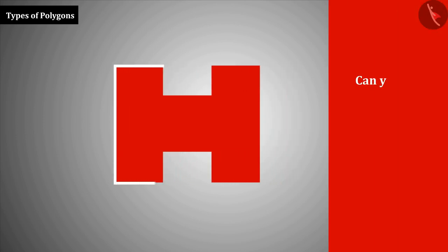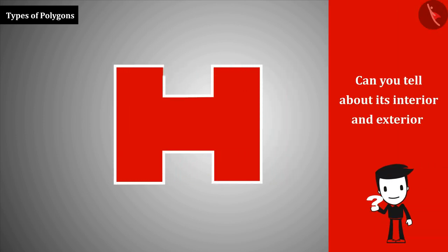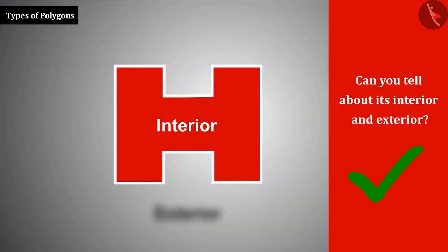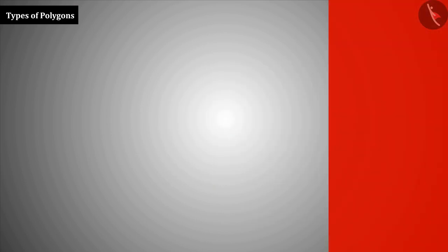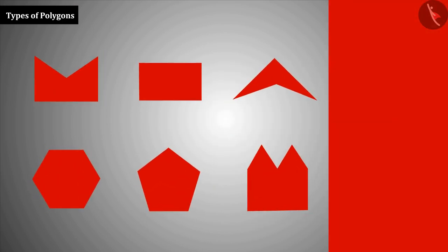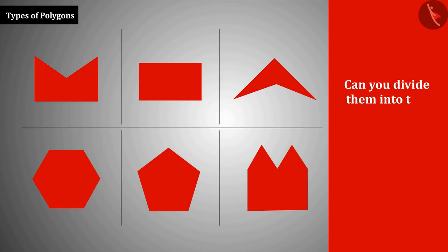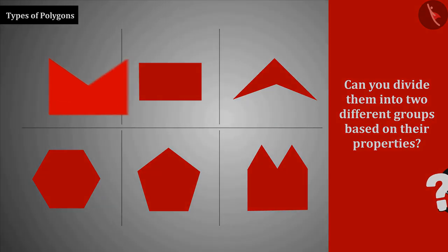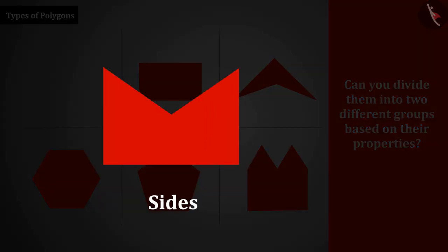Let's look at this closed curve. Can you tell about its interior and exterior? The area inside the curve is the interior and the area outside is called the exterior. We have some polygons here — can you categorize them into two different groups based on their properties?